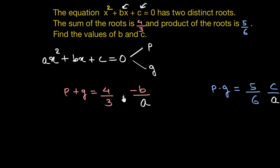So 4 by 3 would be equal to negative of b by a. a in our case is equal to 1, so this would be 1. So negative of b is equal to 4 by 3. On multiplying both sides by negative 1, b would be equal to negative of 4 by 3.